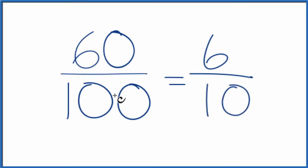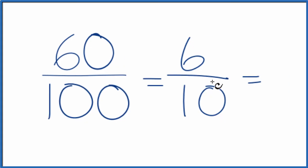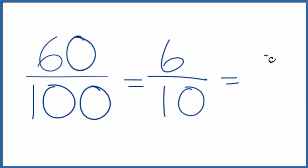So we've reduced 60 over 100 down to 6 over 10, but these are even numbers. We could reduce this even further. Let's divide both of them by 2. 6 divided by 2 is 3. 10 divided by 2 is 5, and we get 3 fifths.